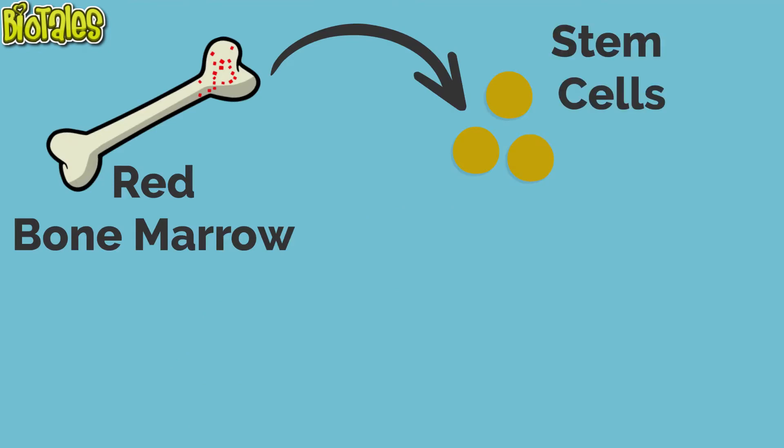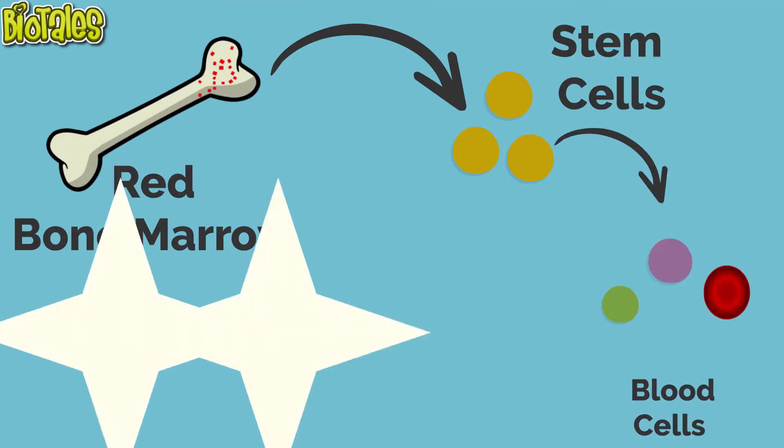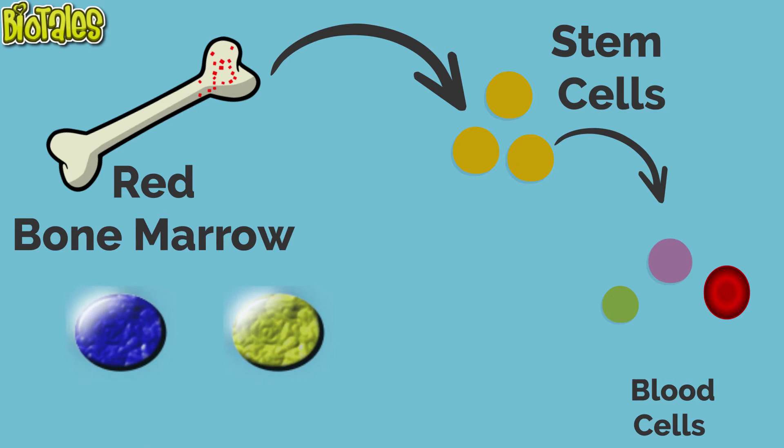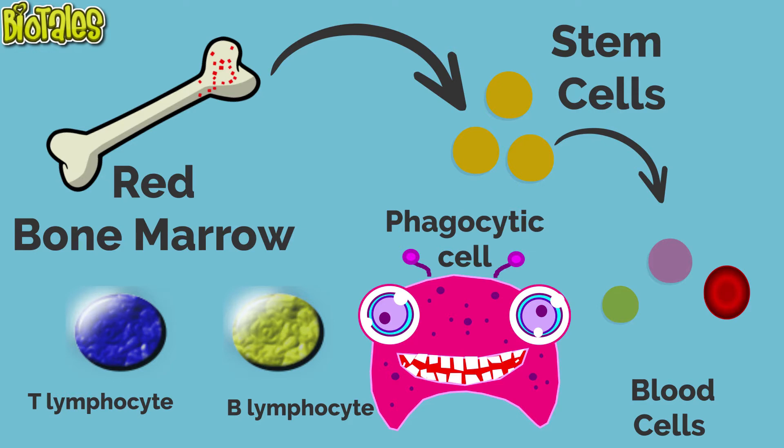Stem cells develop into blood cells including lymphocytes. Lymphoid tissues contain large numbers of lymphocytes including T-cells, B-cells, and phagocytic cells that participate in immune responses.